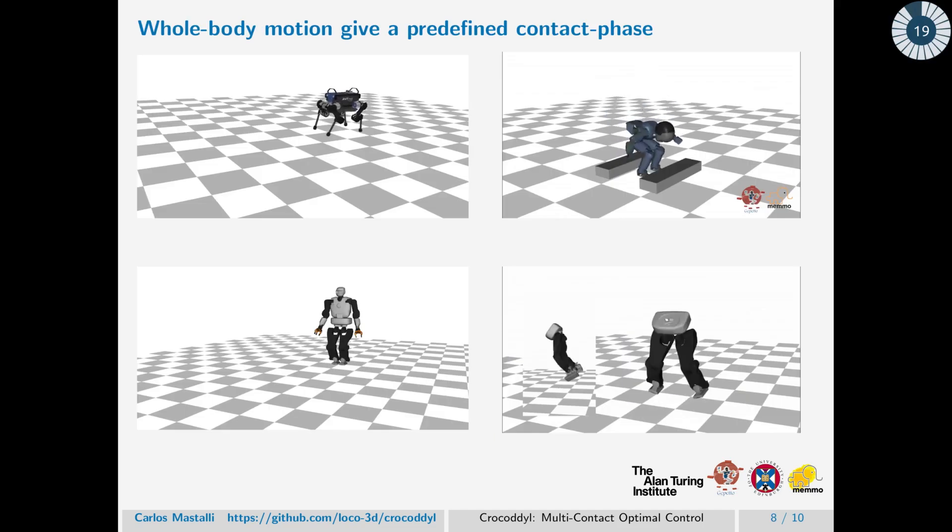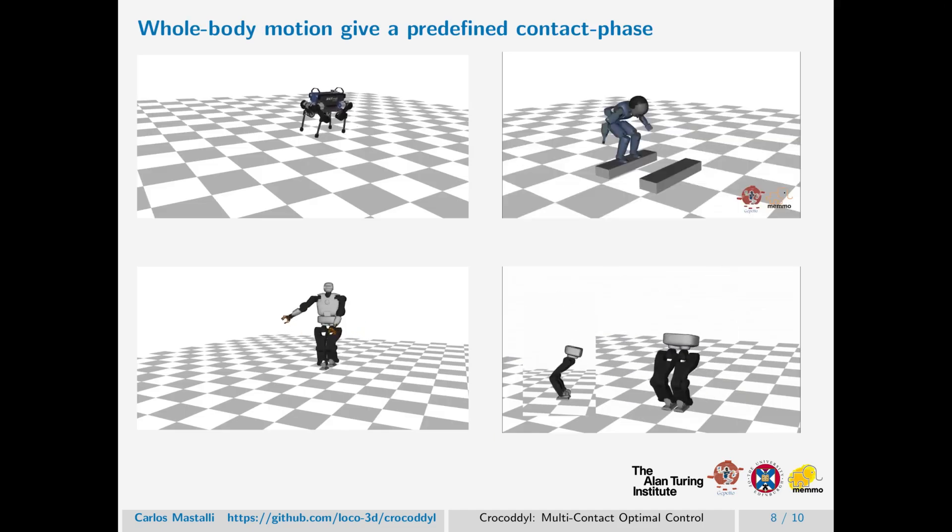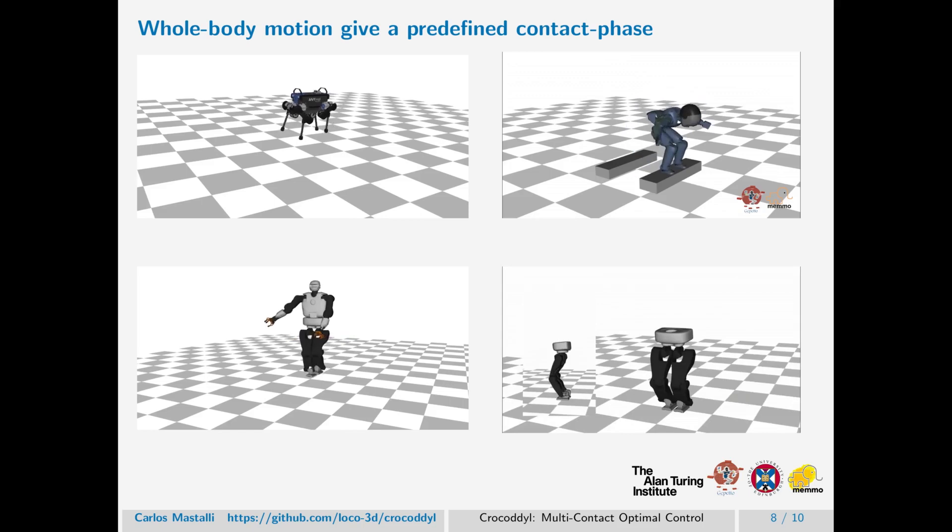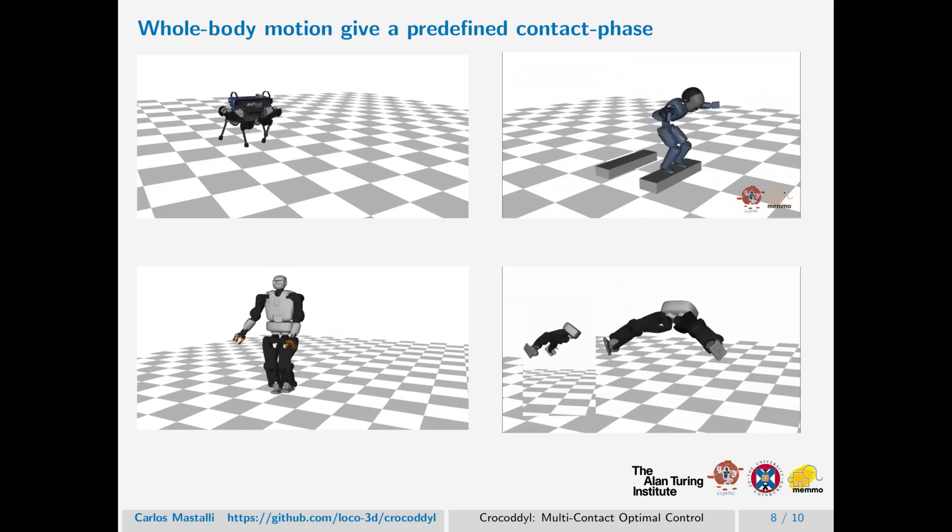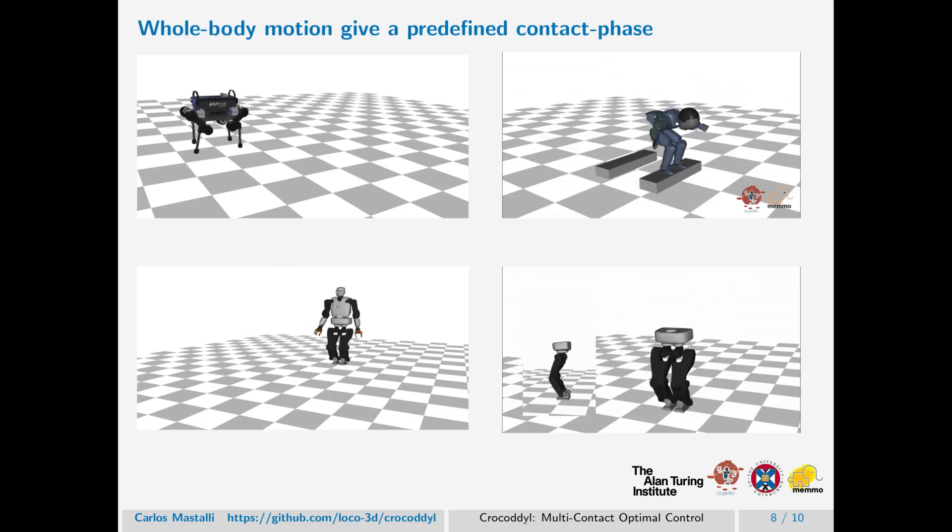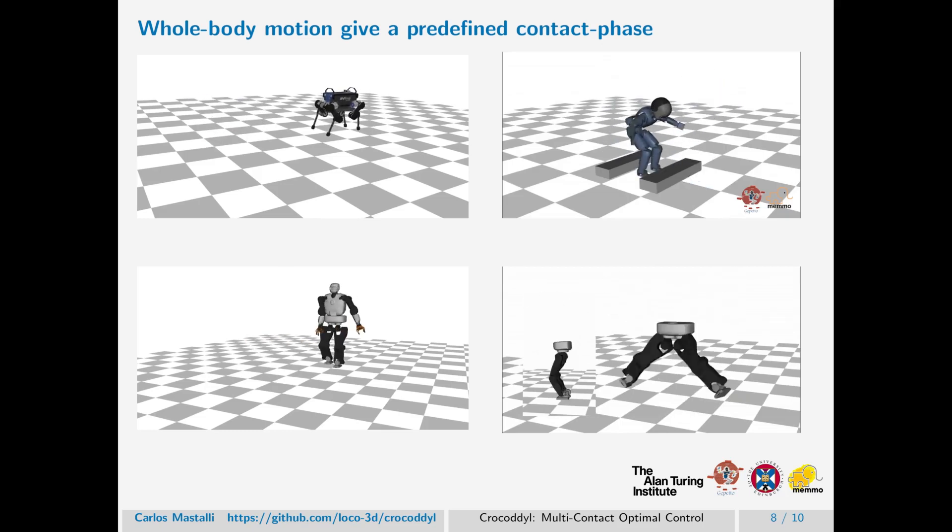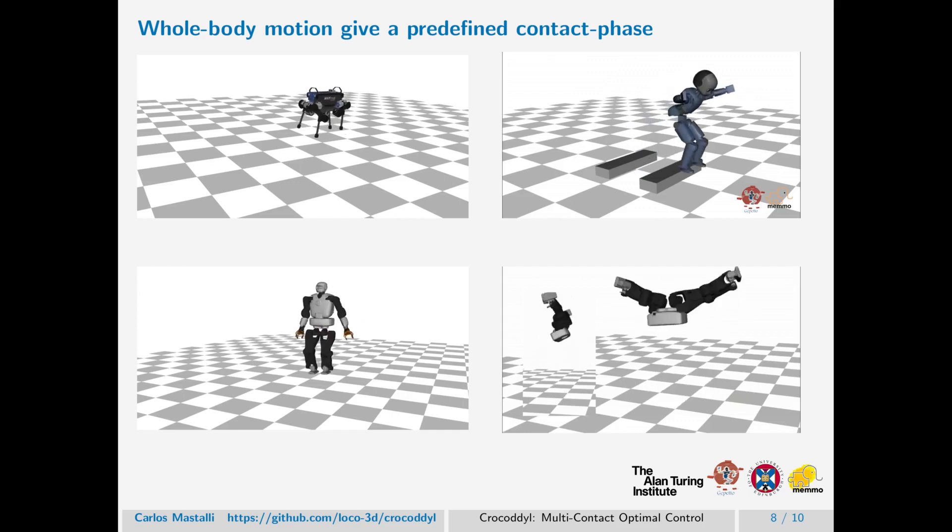Indeed, we could generate different maneuvers or locomotion behavior by pre-defining a contact phase, such as this quadrupedal locomotion or humanoid walk. And it's also possible to define jump behaviors and even a front flip maneuver.